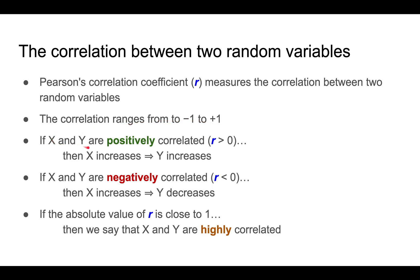The correlation is a number that ranges from minus 1 to plus 1. If X and Y are positively correlated (R is bigger than 0), this means that when X increases, usually you'll also see Y increase.